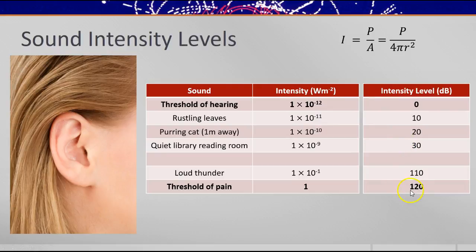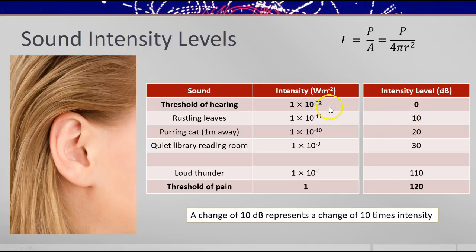So the decibel scale is a simpler way of enabling us to cope with sound loudnesses that we can hear. And each 10 decibels represents a change of 10 times the intensity. So 10⁻¹¹ is 10 times bigger than 10⁻¹², and the decibel has gone up by 10 decibels. So 10 decibels represents 10 times more intense sound.